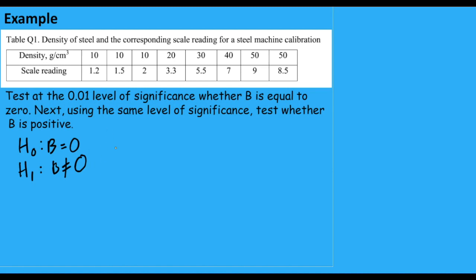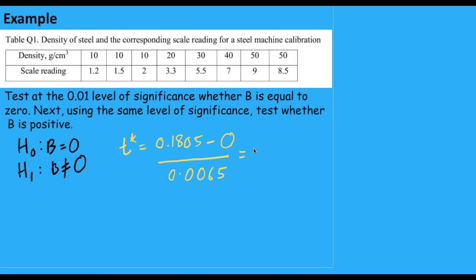Let's move on. The test statistic would be B, estimated slope 0.1805 minus capital B, which is the slope. And B is equals to zero here over SB. And SB is 0.0065. This is based from our previous calculation. Okay, so the test statistics gives us the value of 27.7692.